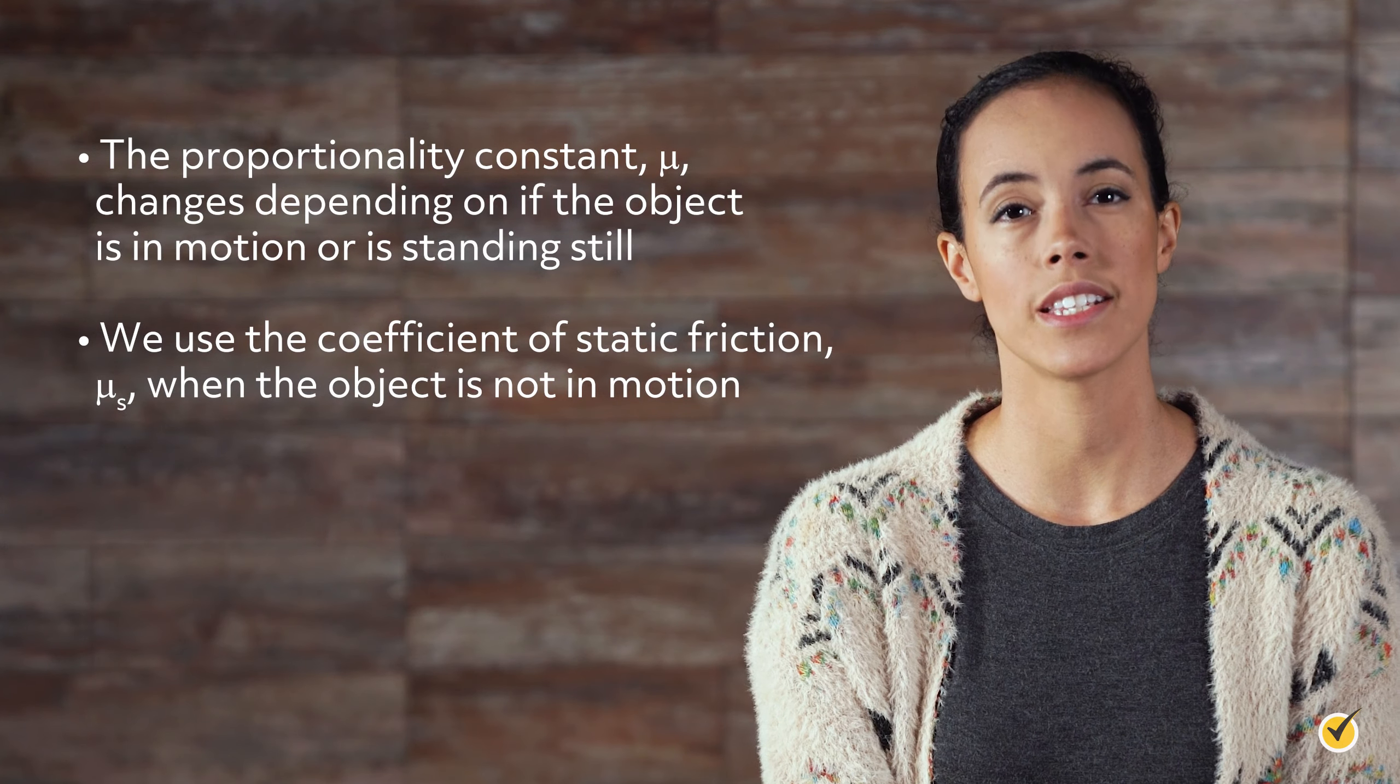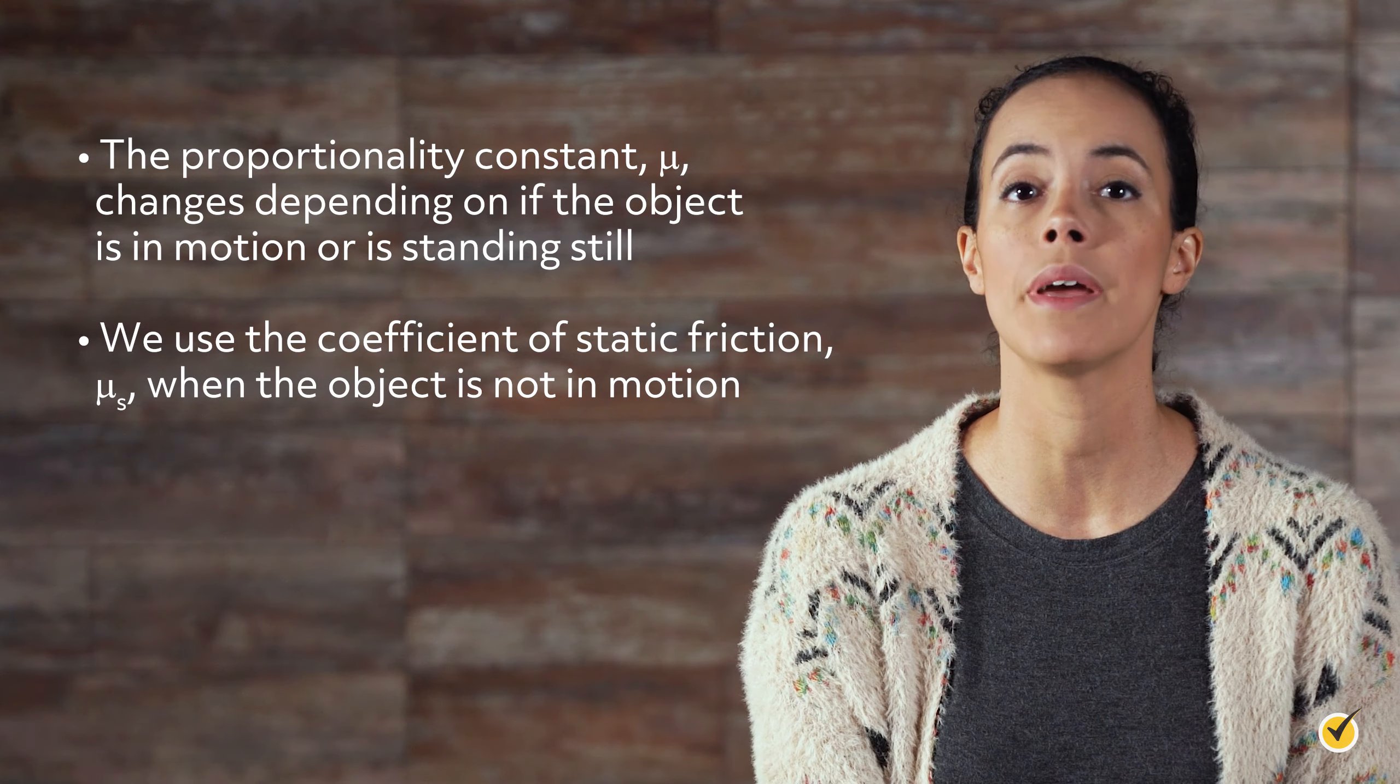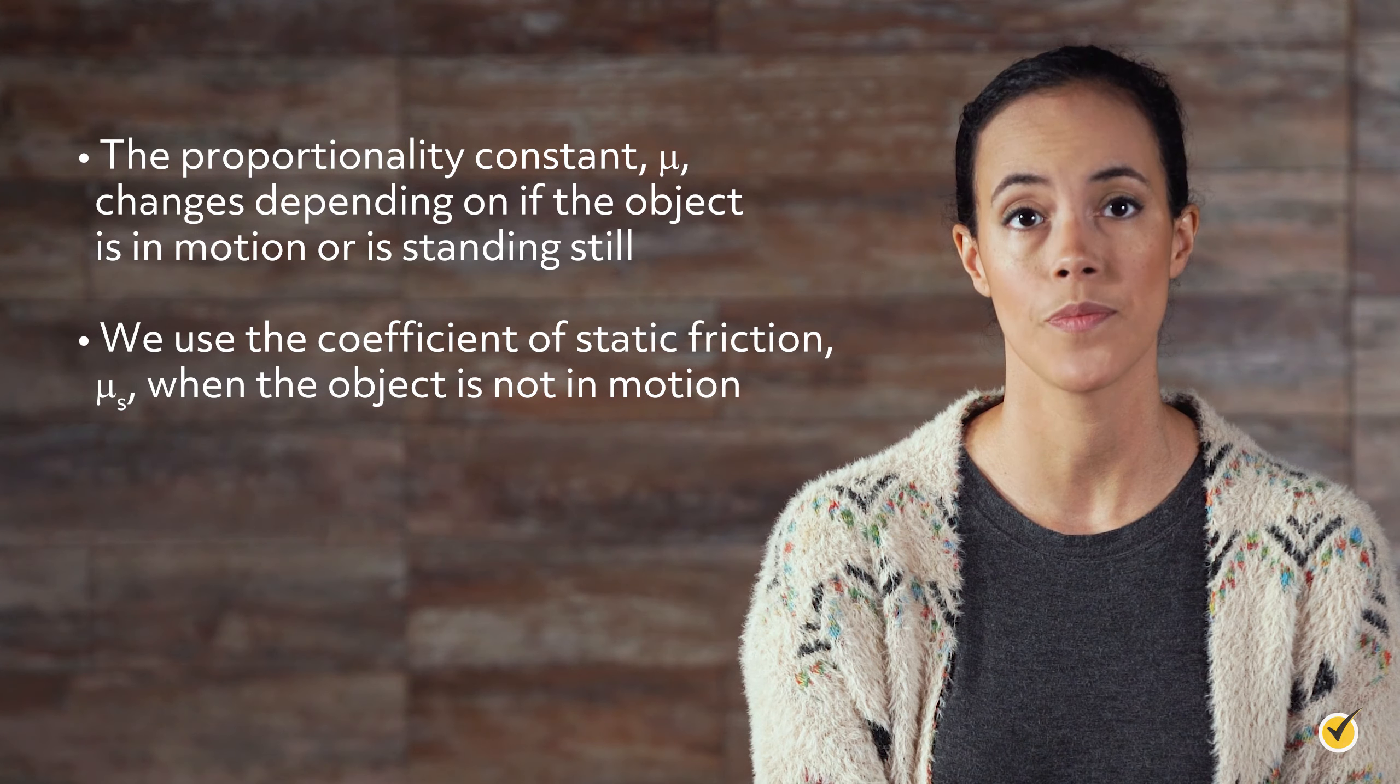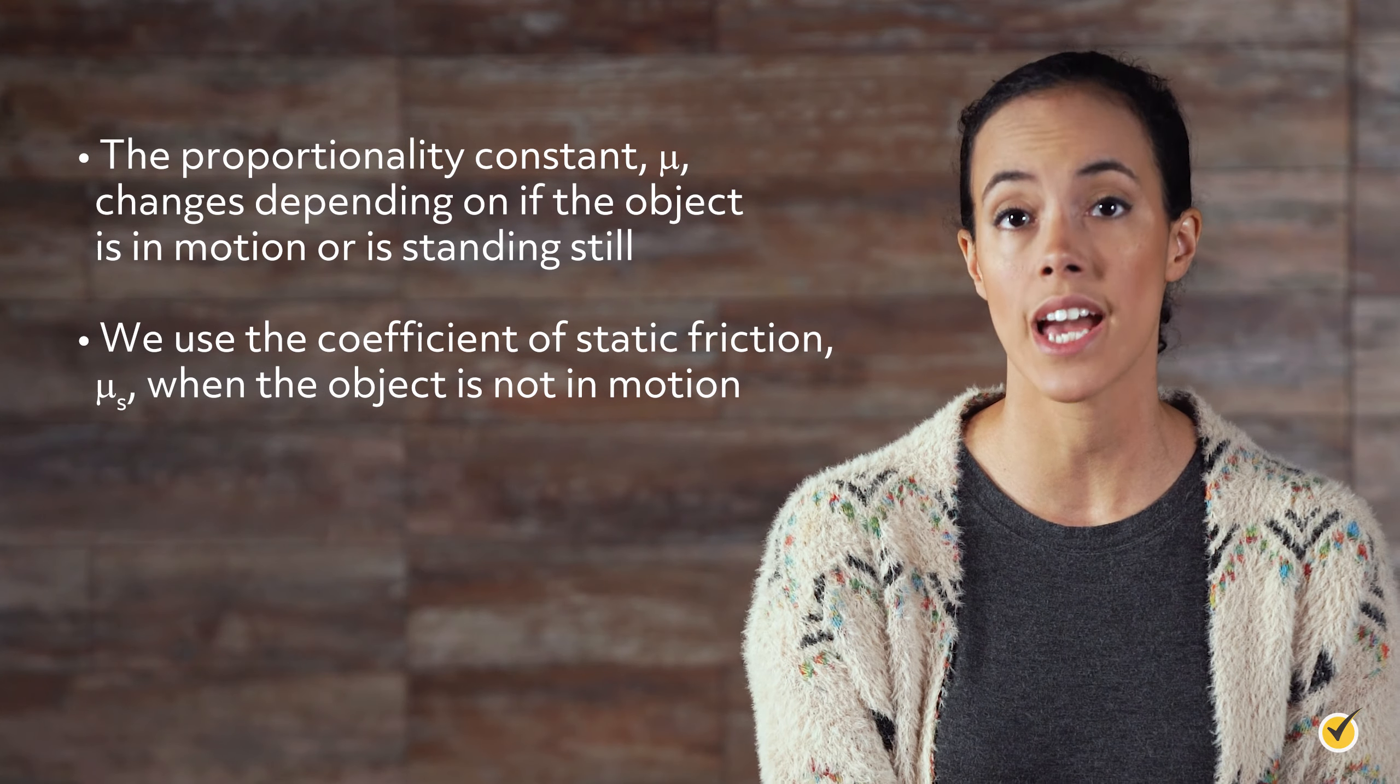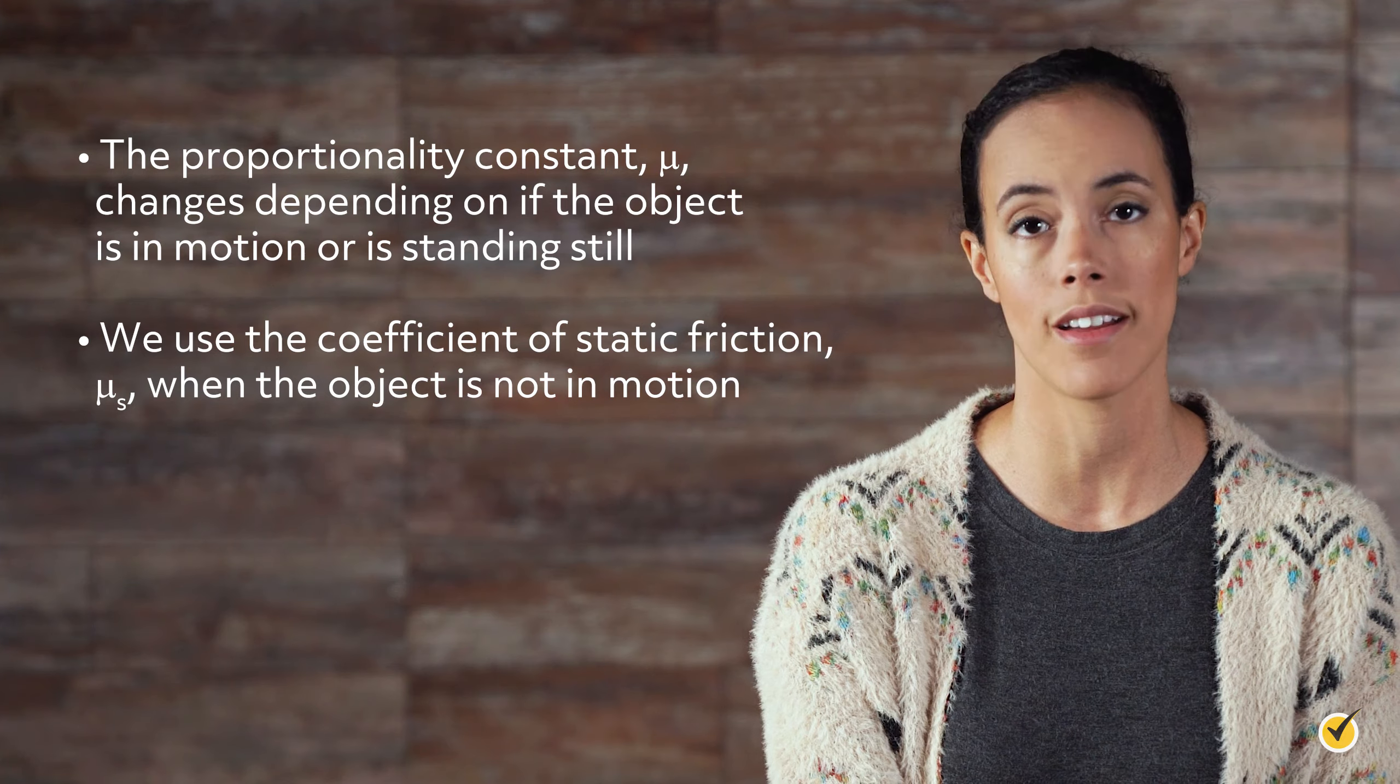The proportionality constant, mu, changes depending on if the object is in motion or is standing still. We use the coefficient of static friction when the object is not in motion.